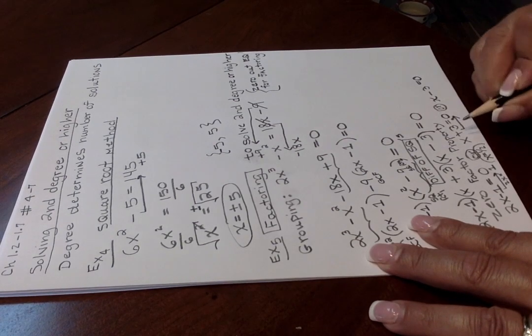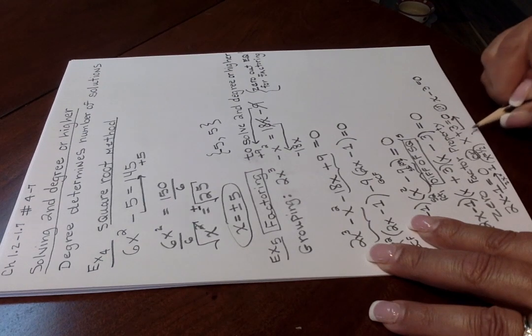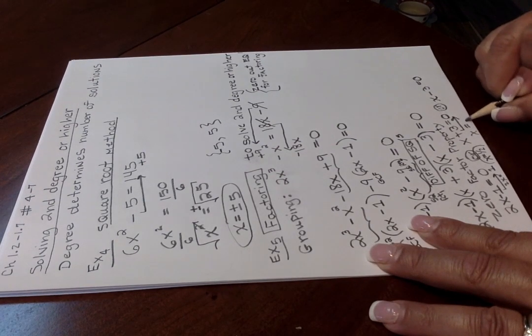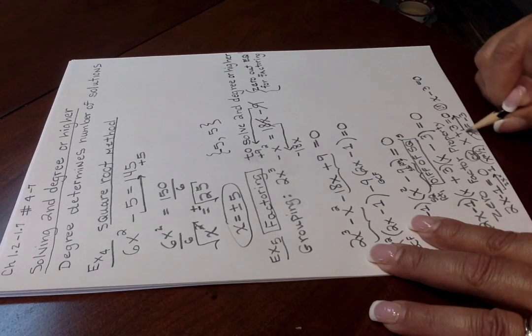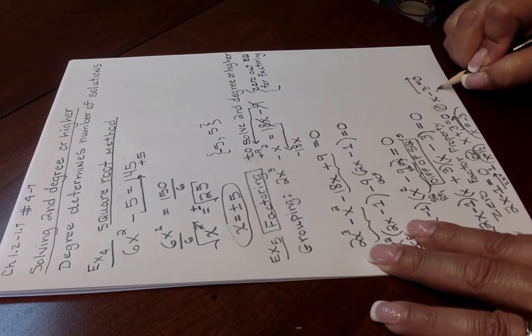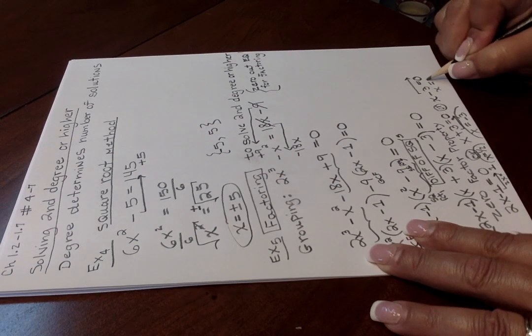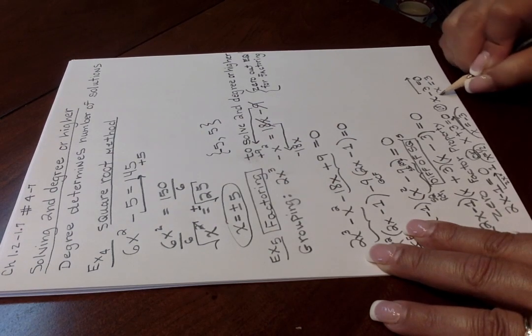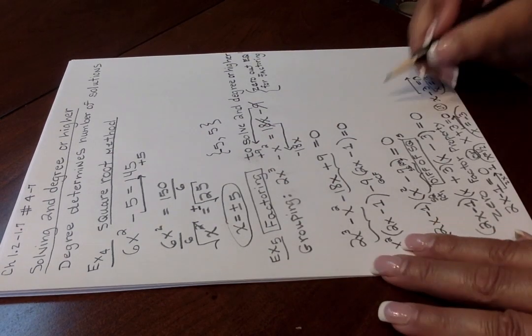For this middle one, you would subtract 3, subtract 3, giving you x equal to negative 3 for your second solution. And here you would move 3 to the right hand side, giving you positive 3 for the third solution.